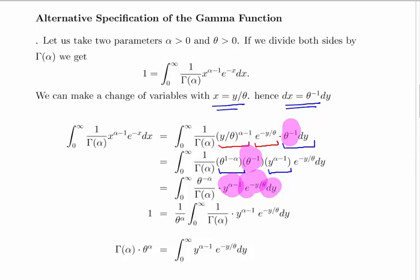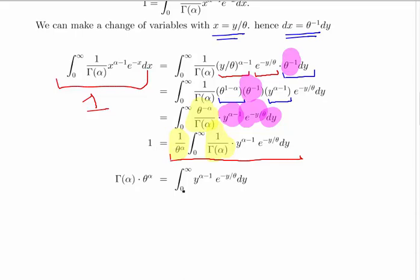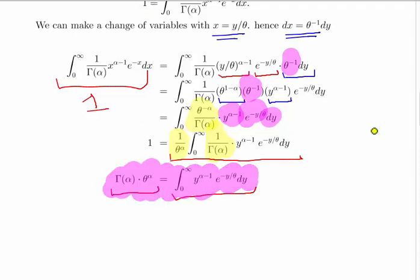So we have theta to the power of minus alpha and 1 divided by gamma of alpha as constants outside the integral. Since this entire expression equals 1, we can bring theta to the power of alpha and the gamma function of alpha to the other side, yielding the gamma function of alpha times theta to the power of alpha equals the integral from 0 to infinity of Y to the power of alpha minus 1 times e to the minus Y divided by theta, dY. This is a very useful alternative specification of the gamma function.